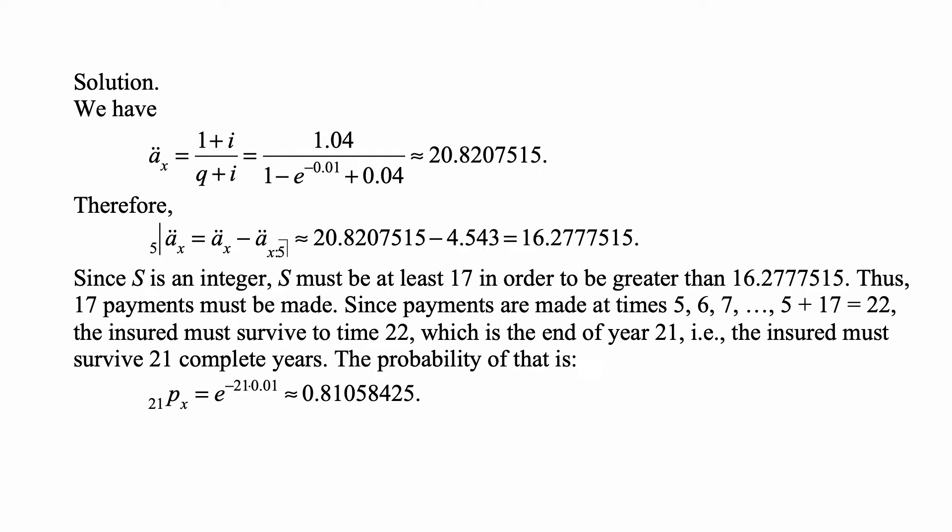We know that A double dot X is equal to 1 plus i over q plus i under constant force, so that's 1.04 over 1 minus e to the minus 0.01 plus 0.04, and that's approximately 20.8207515.